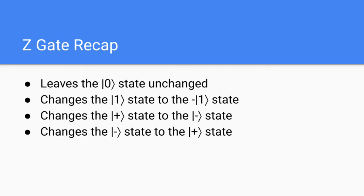Let's recap the Z gate and what happens when we apply it to each of the different states. When we apply the Z gate to the |0⟩ state, it is unchanged. When we apply the Z gate to the |1⟩ state, we get back the negative |1⟩ state. Third, when we apply the Z gate to the |+⟩ state, we get back the |−⟩ state. And finally, when we apply the Z gate to the |−⟩ state, we get back the |+⟩ state.